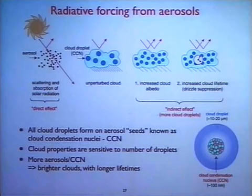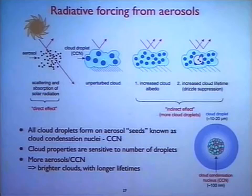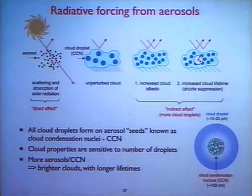Let me tell you why aerosols are important for clouds. Every cloud droplet has a seed inside called the cloud condensation nucleus. When you increase the number of CCN inside a cloud and keep the water content the same — in other words spread the water over more droplets — its brightness increases, so it becomes a more reflective cloud.